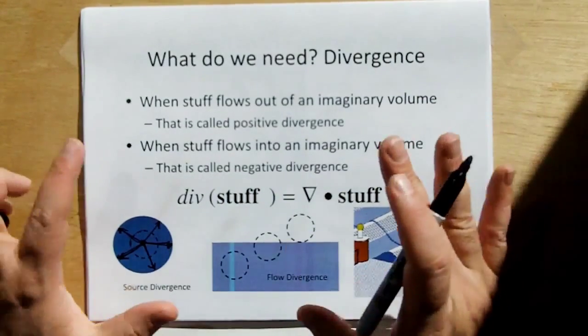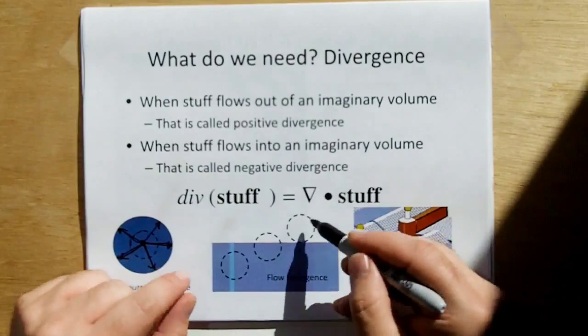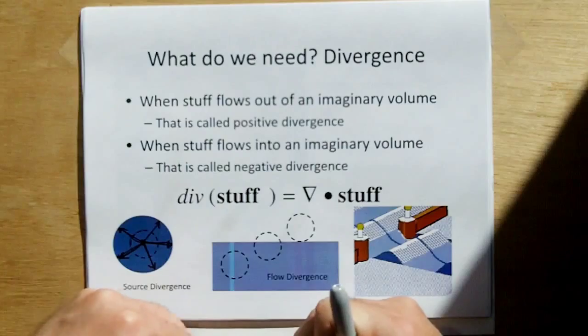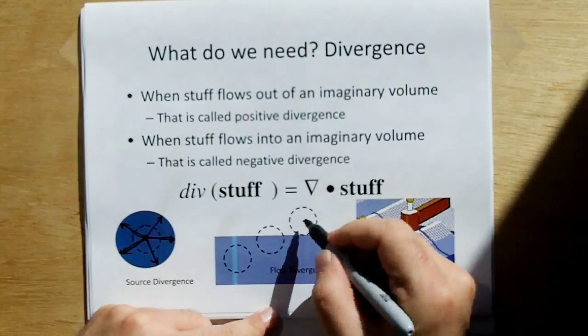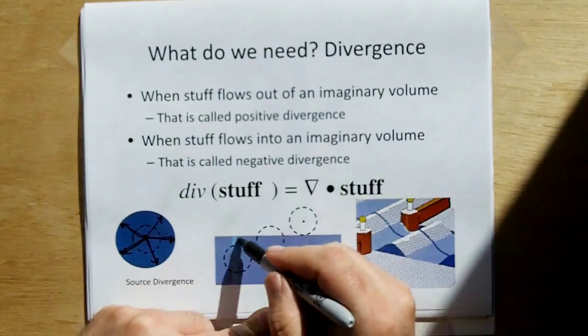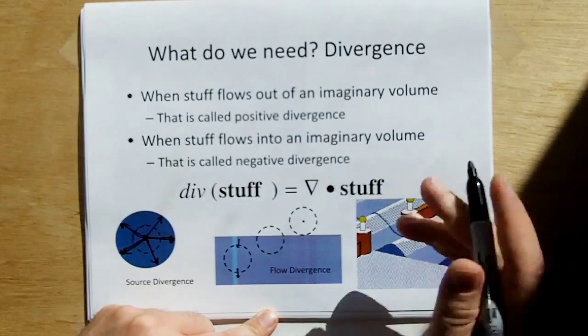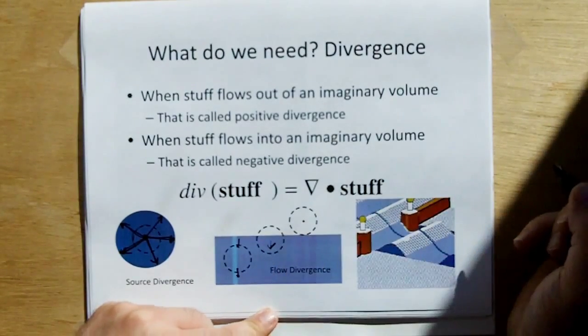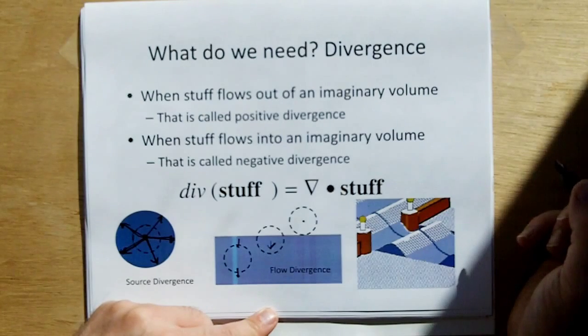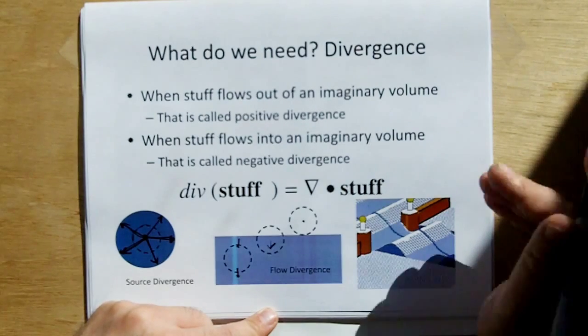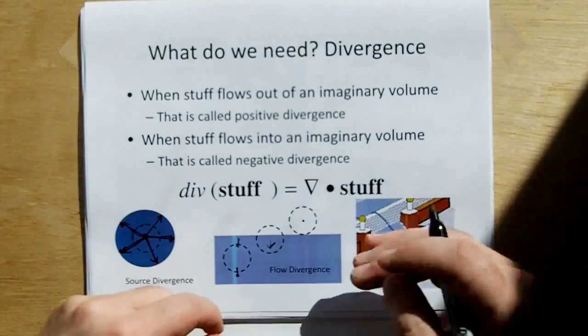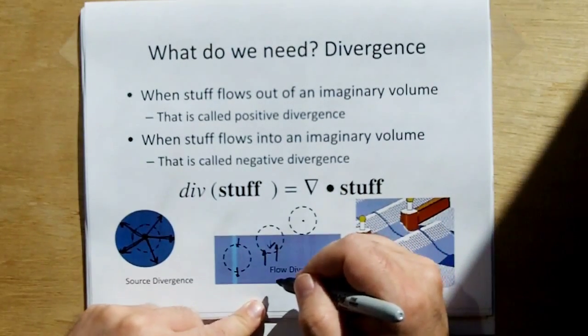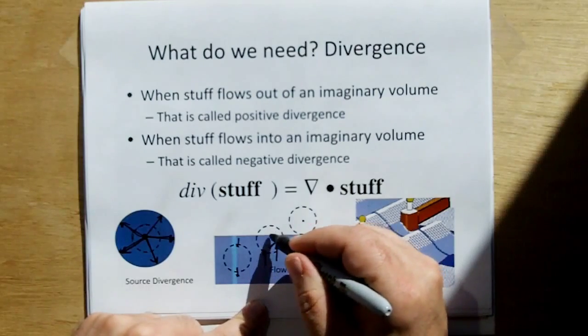Another way to explain divergence is, let's say these are imaginary volumes inside of a bathtub, and you're letting the water in the bathtub drain out. Well, because this guy is already empty, its divergence is zero. Since this guy has the same inflow that it has outflow, that has zero divergence. But because you have water actually flowing out of this one, this one's emptying, that's positive divergence. This is what we call flow divergence. Now, if I increase the water in the bathtub, water is going to be flowing into this volume, and this is going to experience negative divergence.